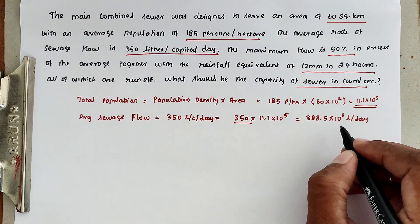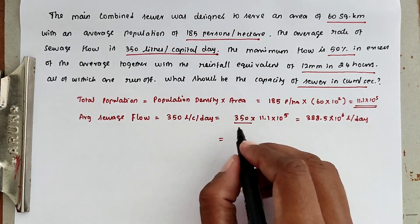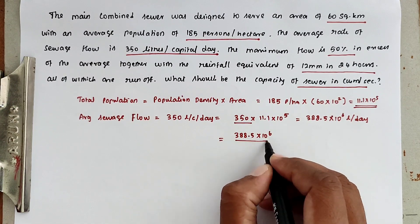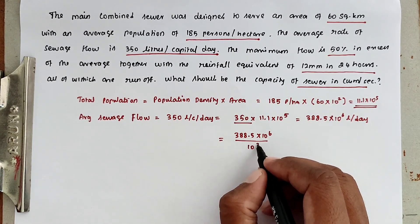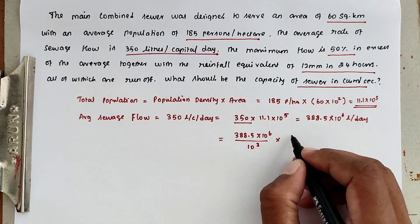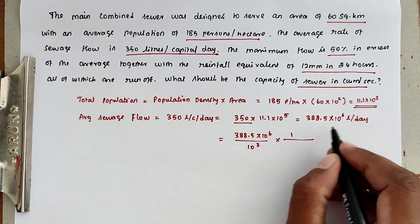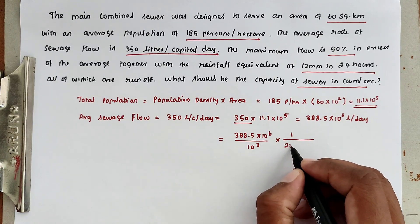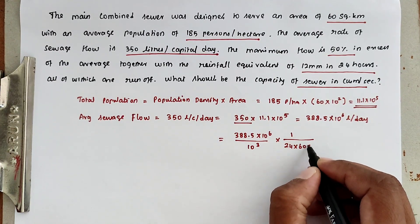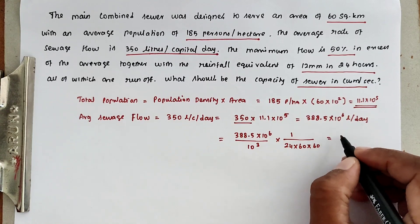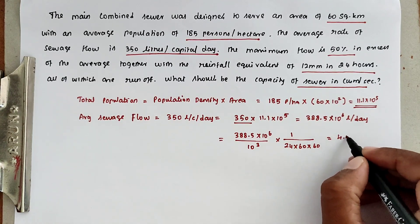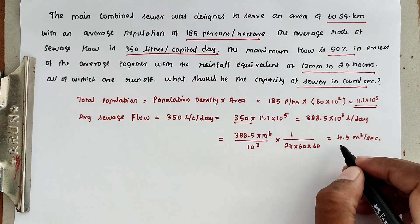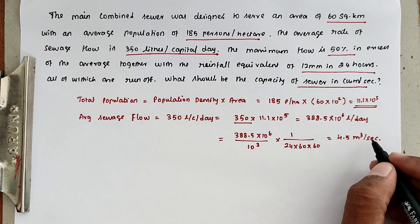Now we convert into meter cube per second. So 388.5 × 10⁶ divided by 10³ (liters to cubic meters), divided by 24 hours into 60 minutes into 60 seconds. Now we get the value of 4.5 meter cube per second. The average sewage flow is 4.5 m³/s.